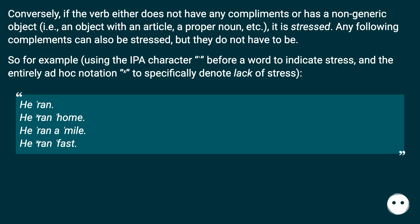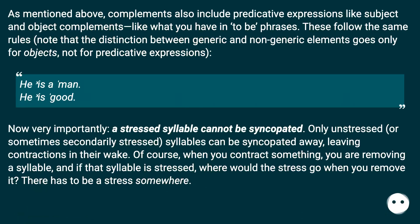As mentioned above, complements also include predicative expressions, like subject and object complements, like what you have in 'to be' phrases. These follow the same rules. Note that the distinction between generic and non-generic elements goes only for objects, not for predicative expressions. For example: 'He is a man.' 'He is good.' Now, very importantly, a stressed syllable cannot be syncopated. Only unstressed, or sometimes secondarily stressed, syllables can be syncopated away, leaving contractions in their wake.